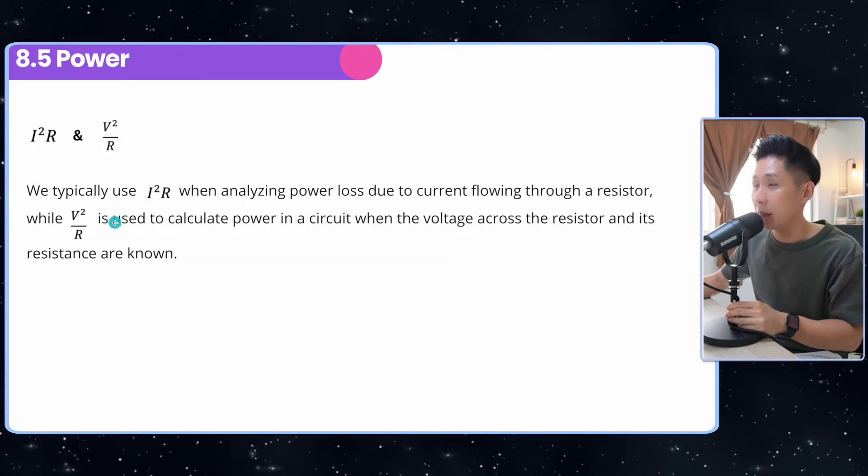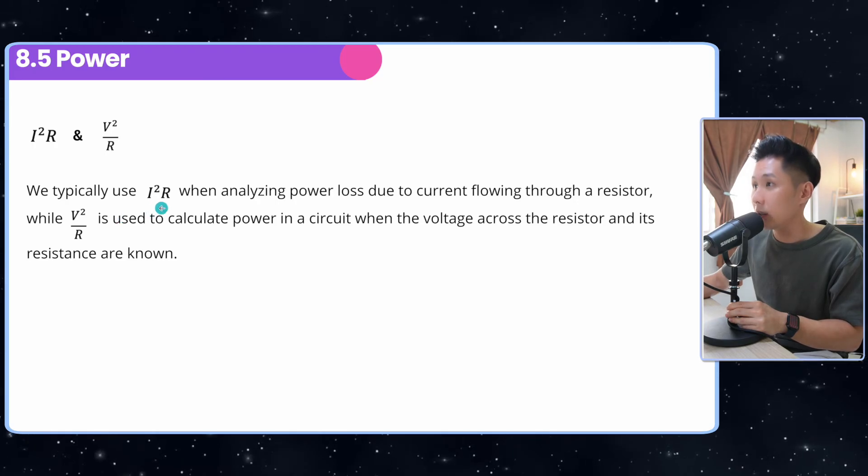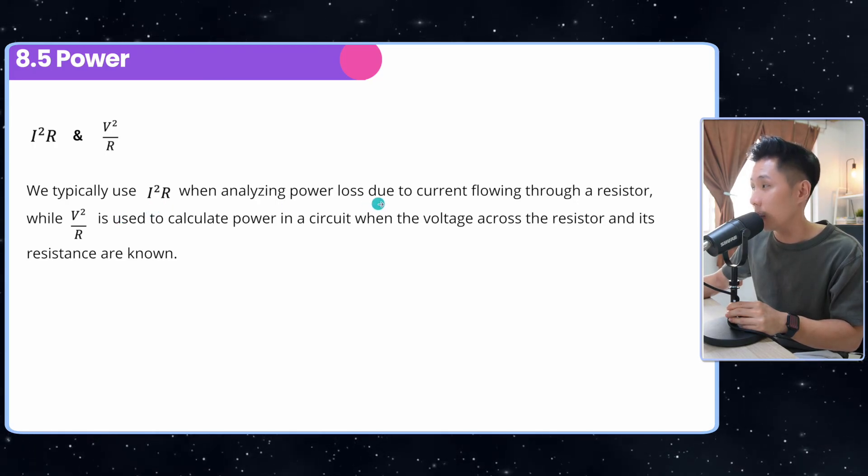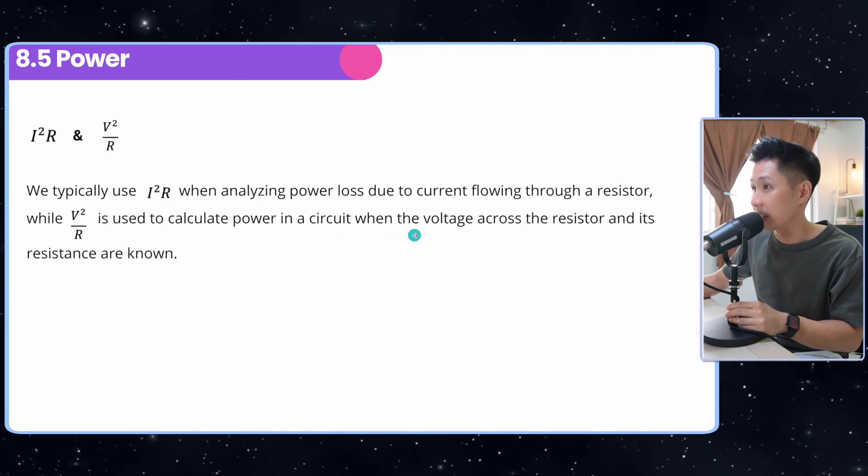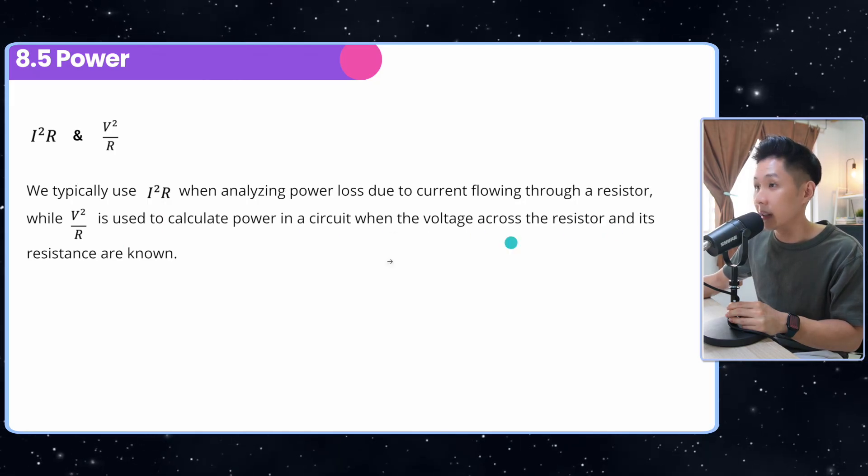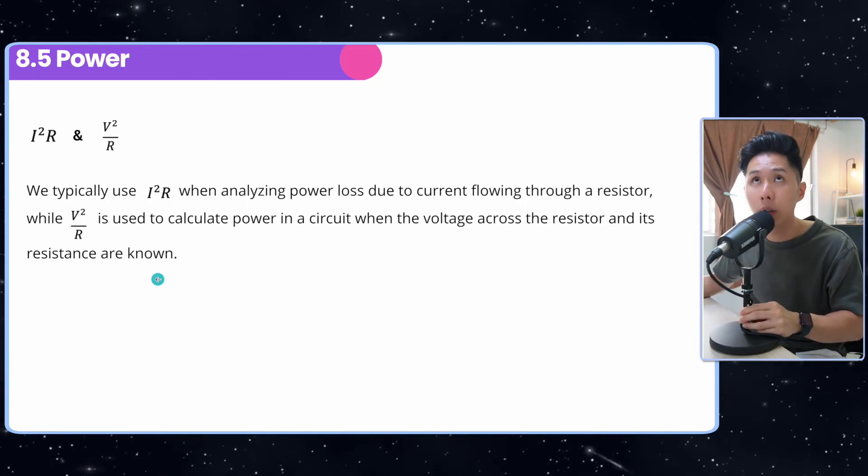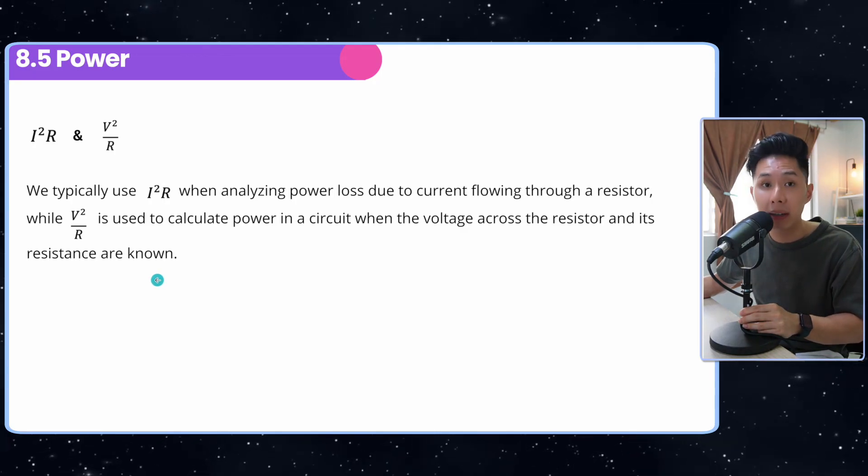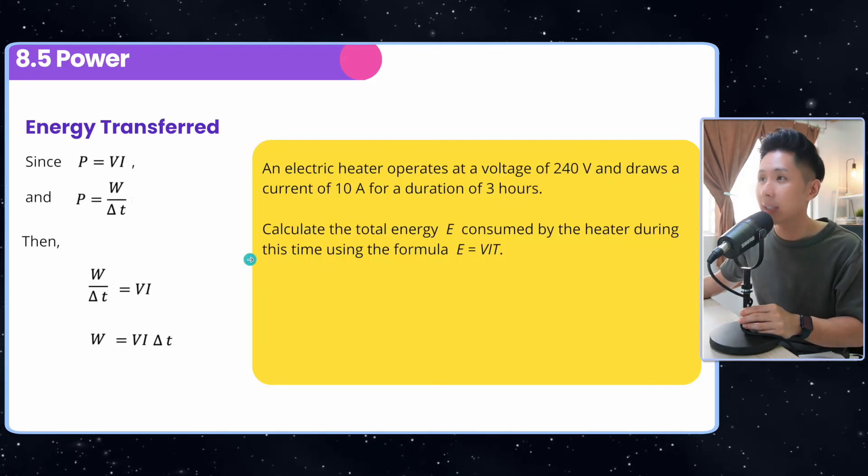Now, here we have a bit of explanation. We typically use I square R when analyzing power loss. V square R is used to calculate power in the circuit when voltage across the resistor and its resistance are known. So make sure you know which formula to use depending on the context.